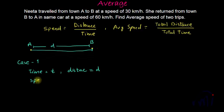And the first case speed is equal to 30 kilometers per hour. That means 30 is equal to D by T or you can say T is equal to D by 30.